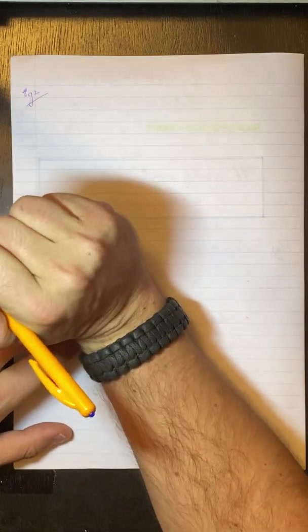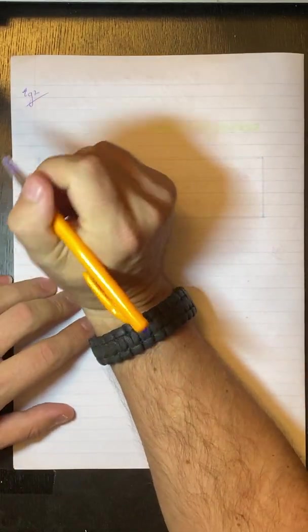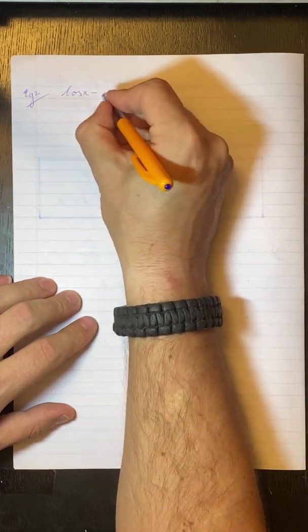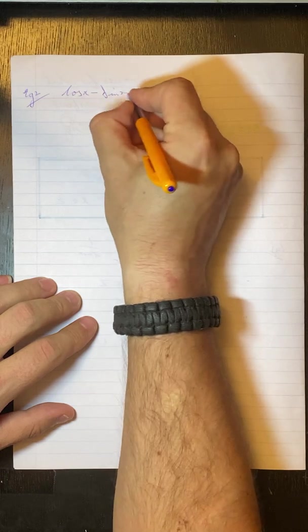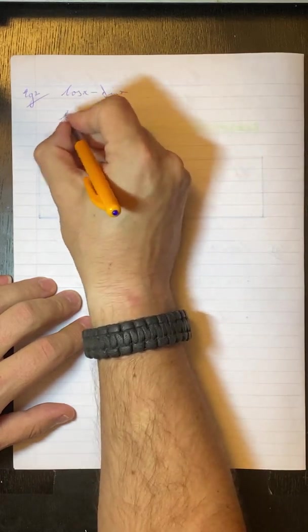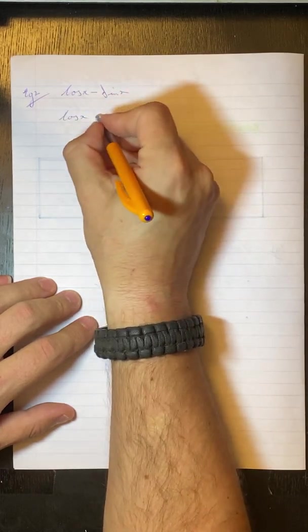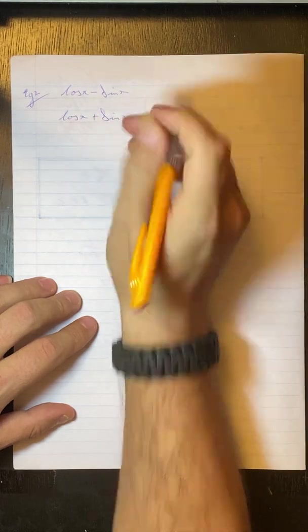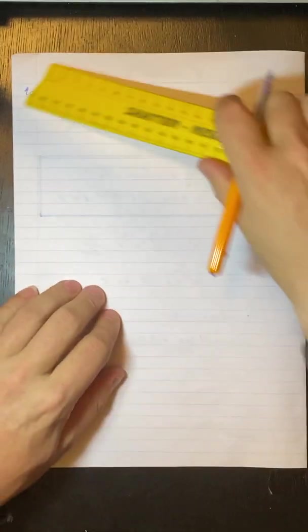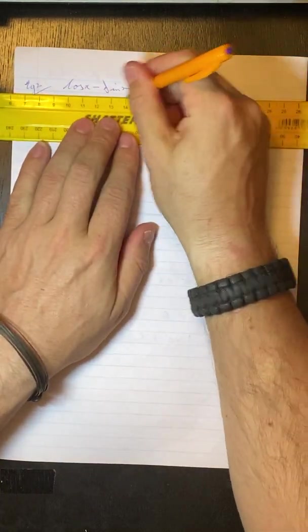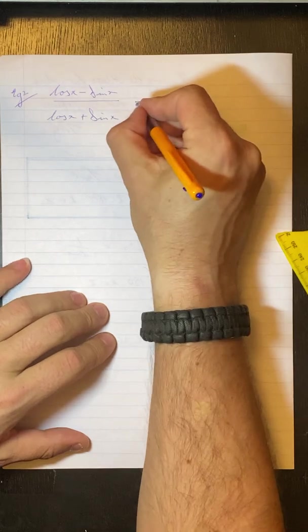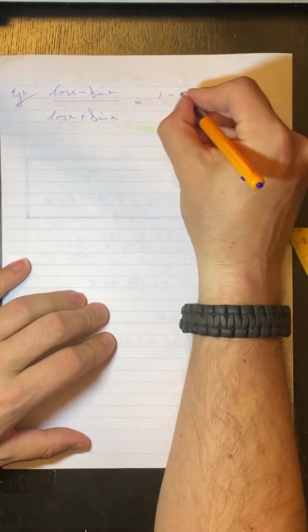All right, going on to example two. Again it's saying for which values of x is this identity cos x minus sin x over cos x plus sin x equals 1 minus tan x.